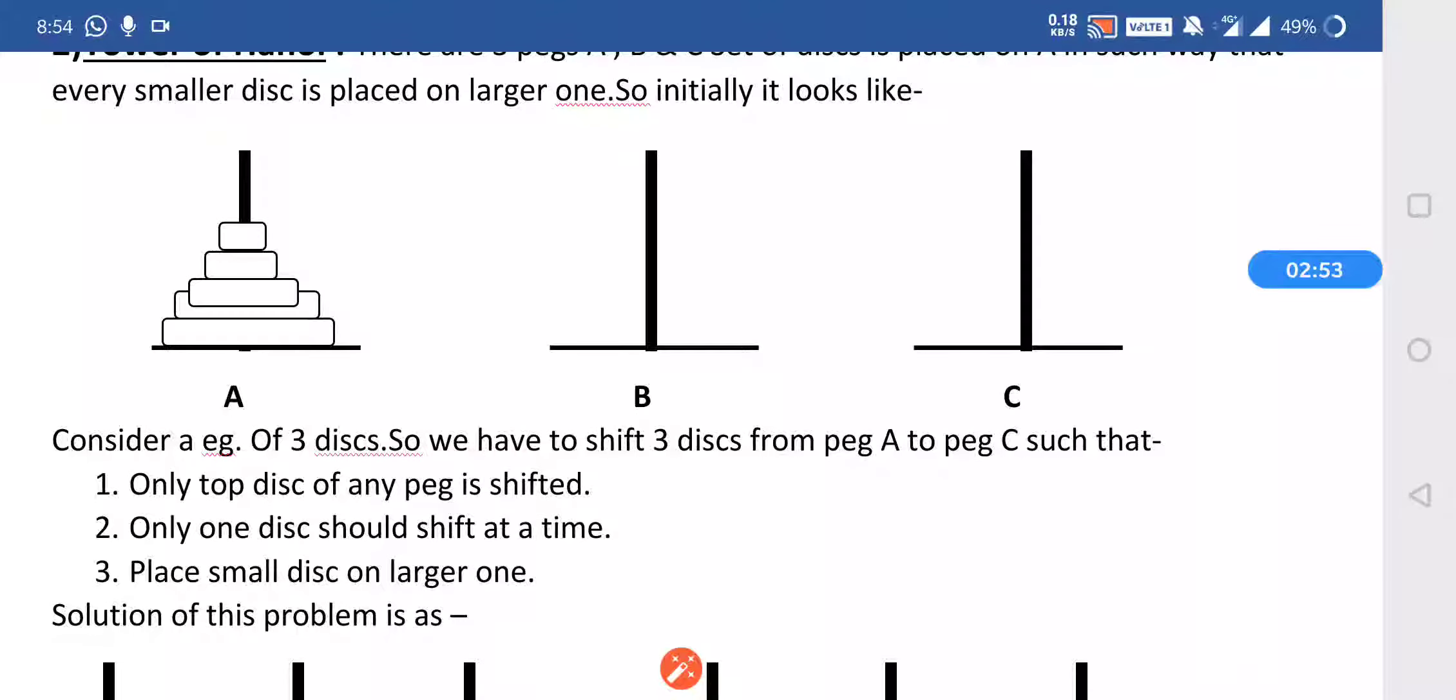These three pegs are fixed. By using these three pegs, we have to shift the disks from A to C. This was the procedure of Tower of Hanoi.